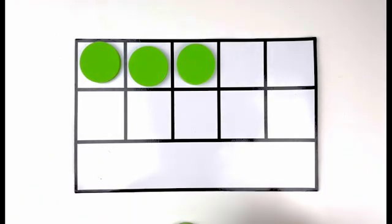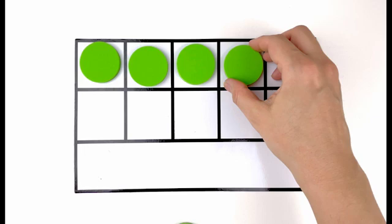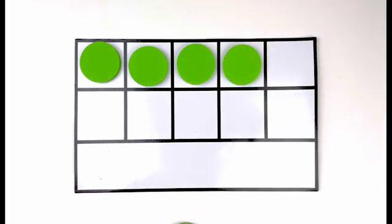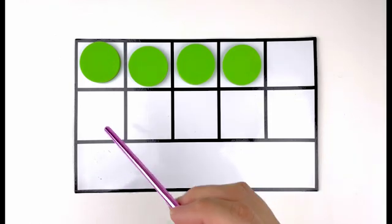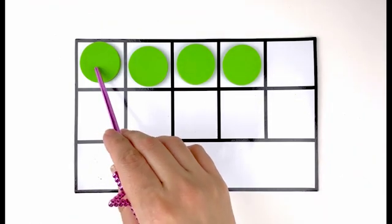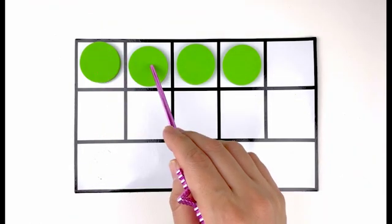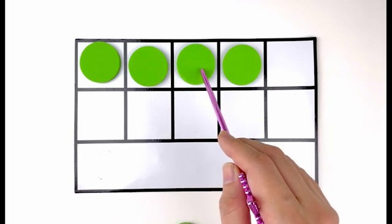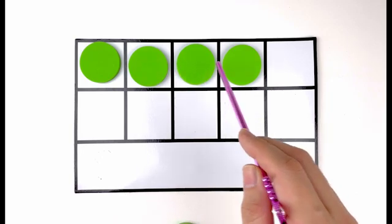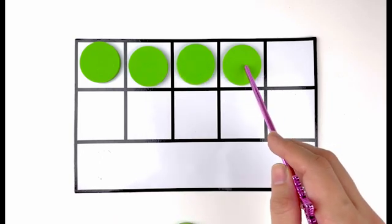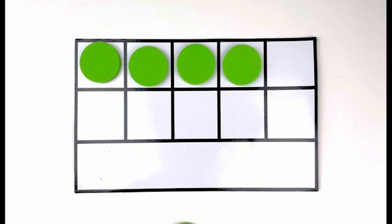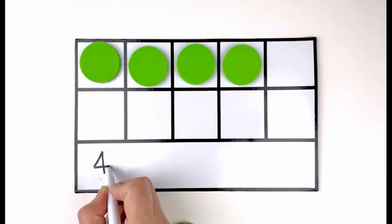Three. Let's add another one. How many green circles do you see? Let's count them. One, two, three, four. Four green circles. Number four.